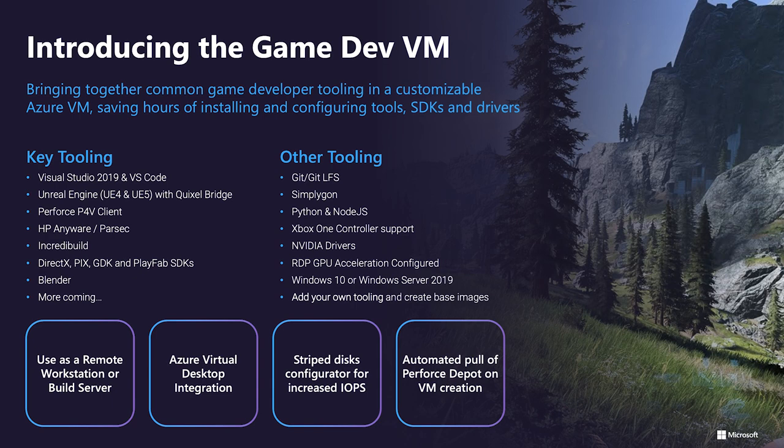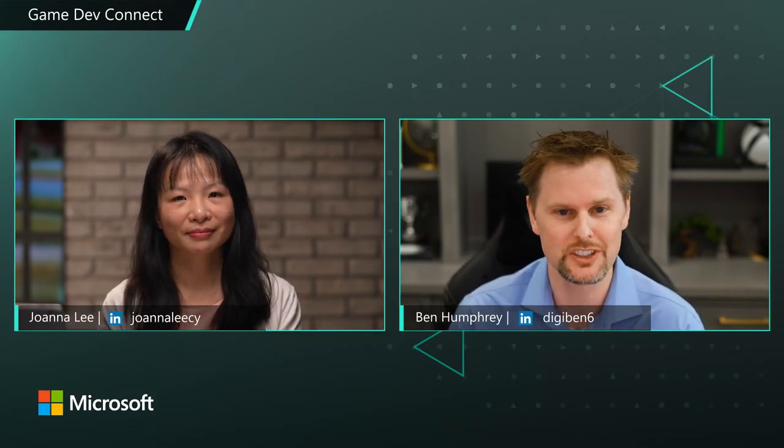It comes with Microsoft Visual Studio, a game engine like Unreal Engine 5 by Epic Games, source control clients like Perforce or Git, artist tooling, GPU drivers, and group policies already set up to enable things like RDP acceleration and Xbox controller support. We also have Stripe disks and mounting file shares already ready to go. It saves developers or IT admins hours by not having to configure that Gamedev workstation from scratch.